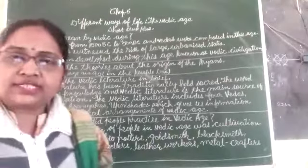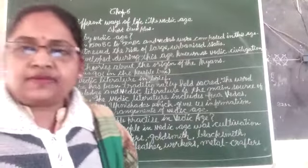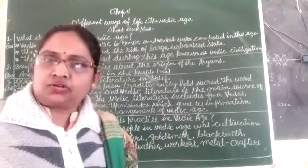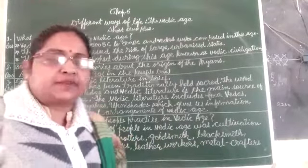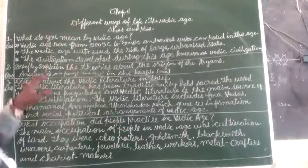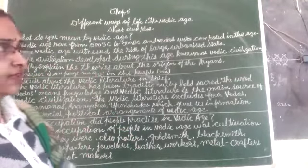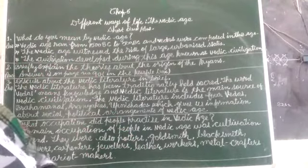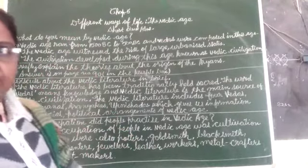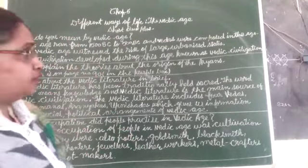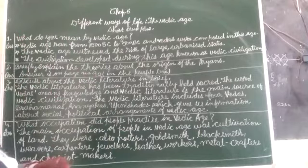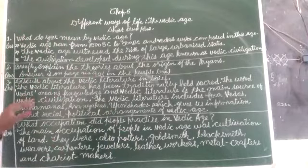Hello students. Today we will do the short question answers of chapter number 5, that is 'Different Ways of Life in the Vedic Age.'